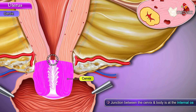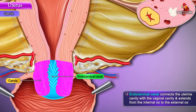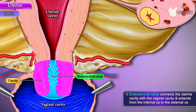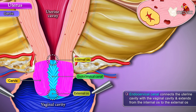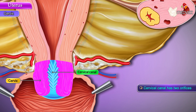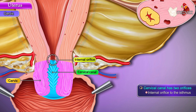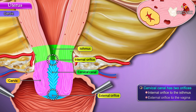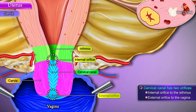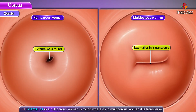The junction between the cervix and the body is at the internal os. The endocervical canal connects the uterine cavity with the vaginal cavity and extends from the internal os to the external os. The cervical canal has two orifices: the internal orifice to the isthmus and the external orifice to the vagina.